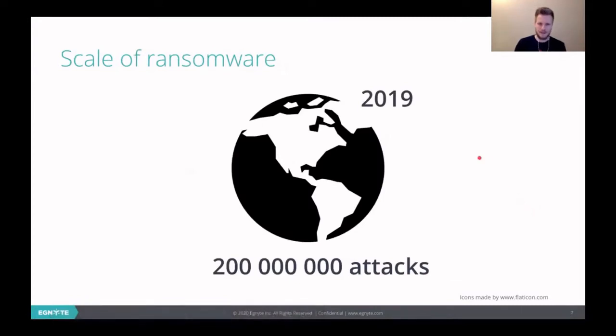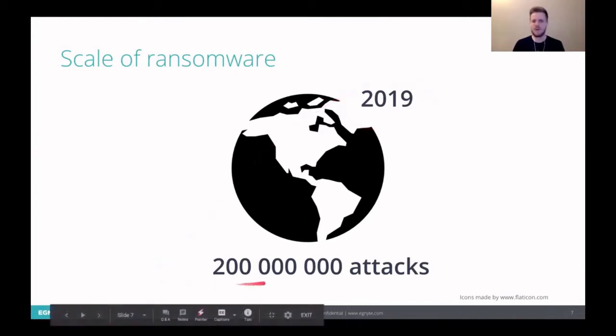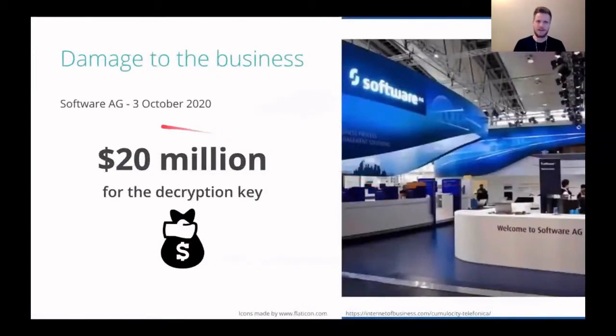So what's the scale? It's pretty huge. In only 2019, we had over 200 million of attacks. And those attacks can be pretty dangerous. They can do damage to the business. For example, Software AG, one of the biggest software companies in the world, they were attacked on the 3rd October 2020. It's a very fresh thing. And the attacker encrypted their files. The company was blocked by that and the ransom for the decryption was like 20 million dollars. It's huge money.